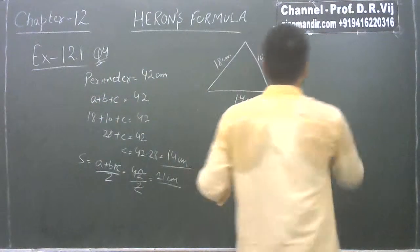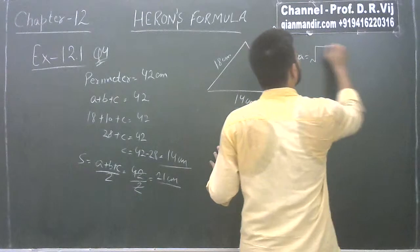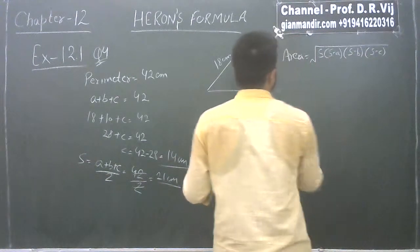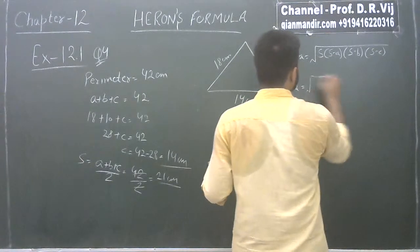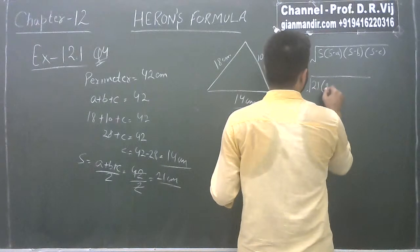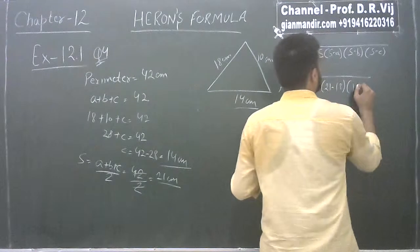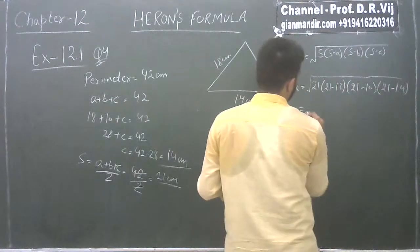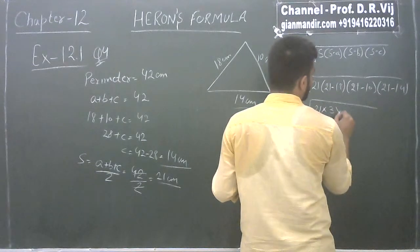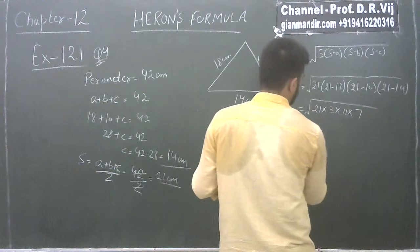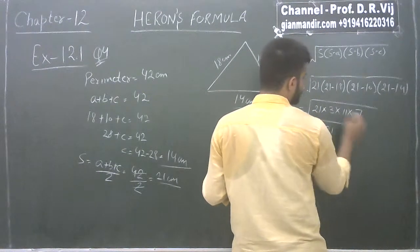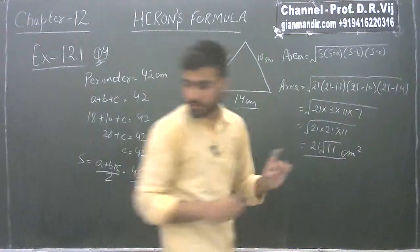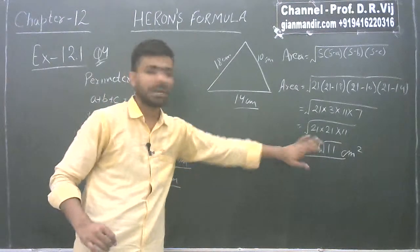Now apply Heron's formula: Area = √(S × (S−A) × (S−B) × (S−C)). Putting values — S is 21: √(21 × (21−18) × (21−10) × (21−14)) = √(21 × 3 × 11 × 7). Since 21 × 3 × 7 = 21 × 21, we get 21√11 centimeter square.